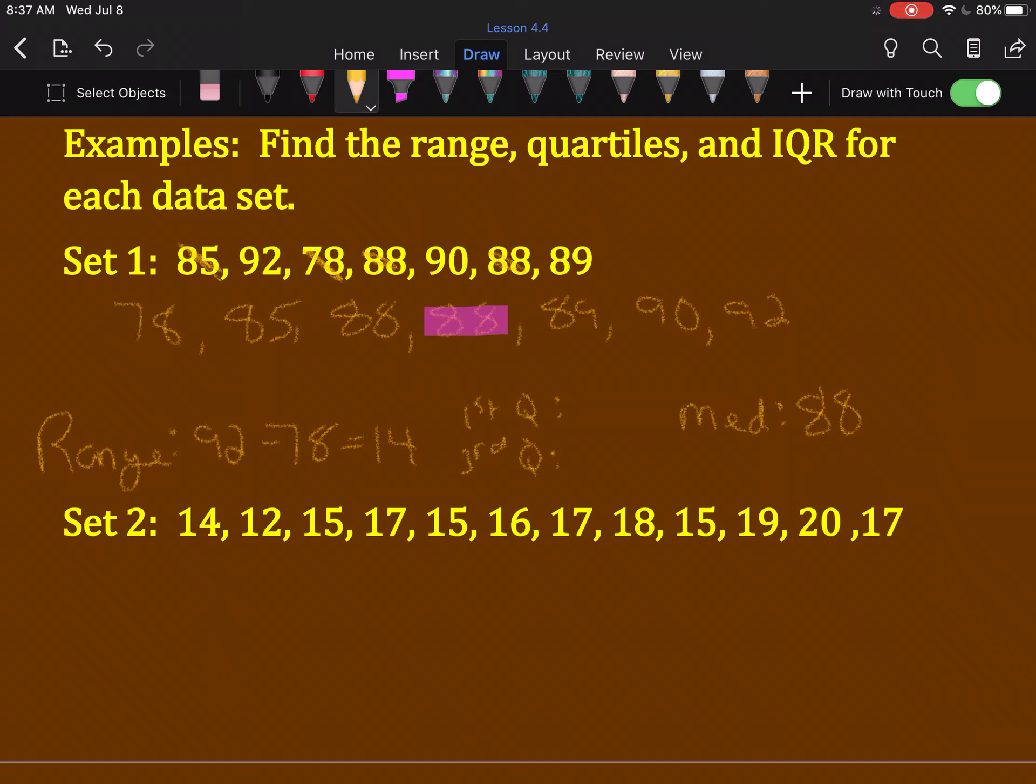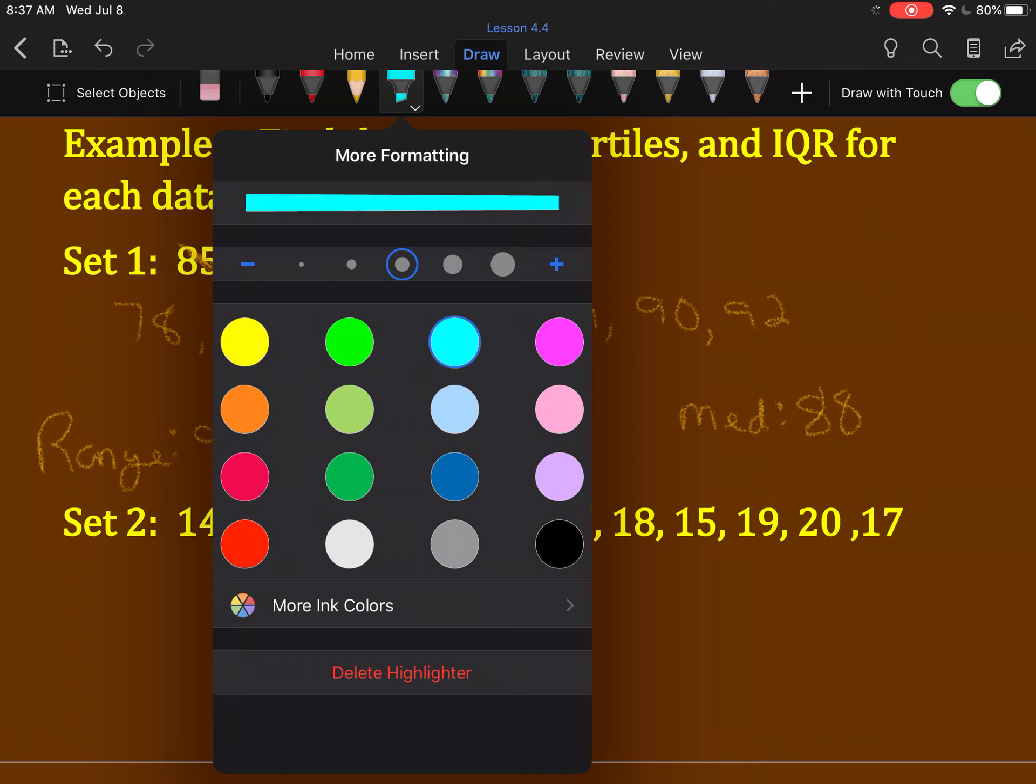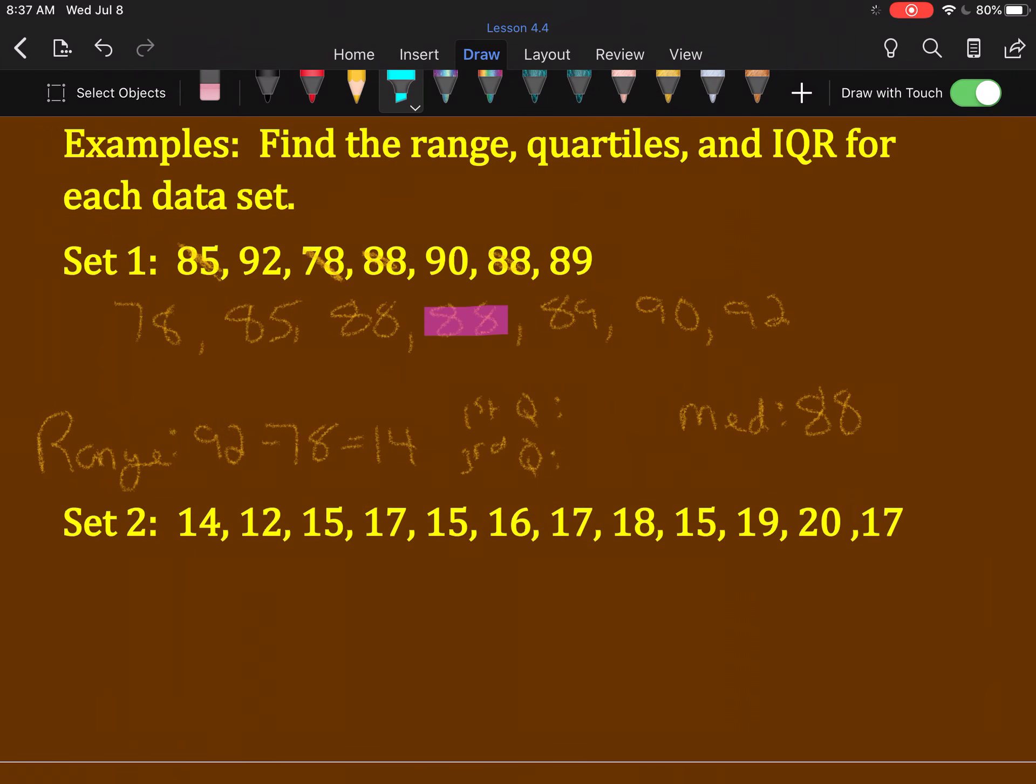The next thing we need after we do this is to say, in the bottom group of numbers, 78, 85, and 88, which number is in the middle? Now, let's see, 85.